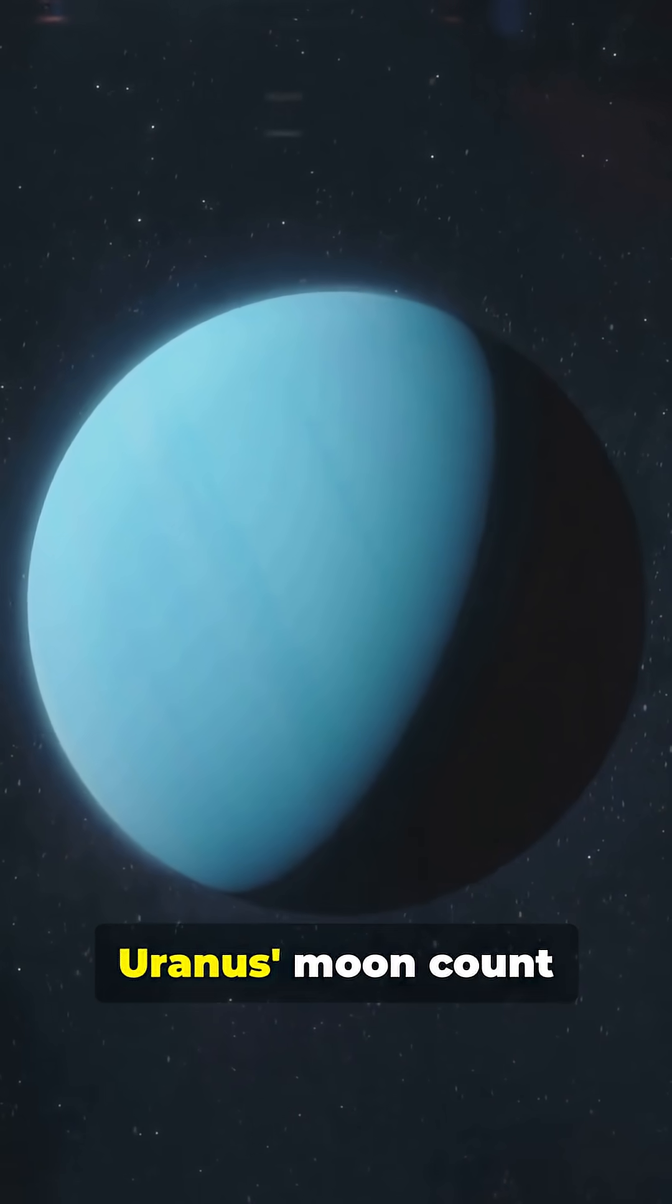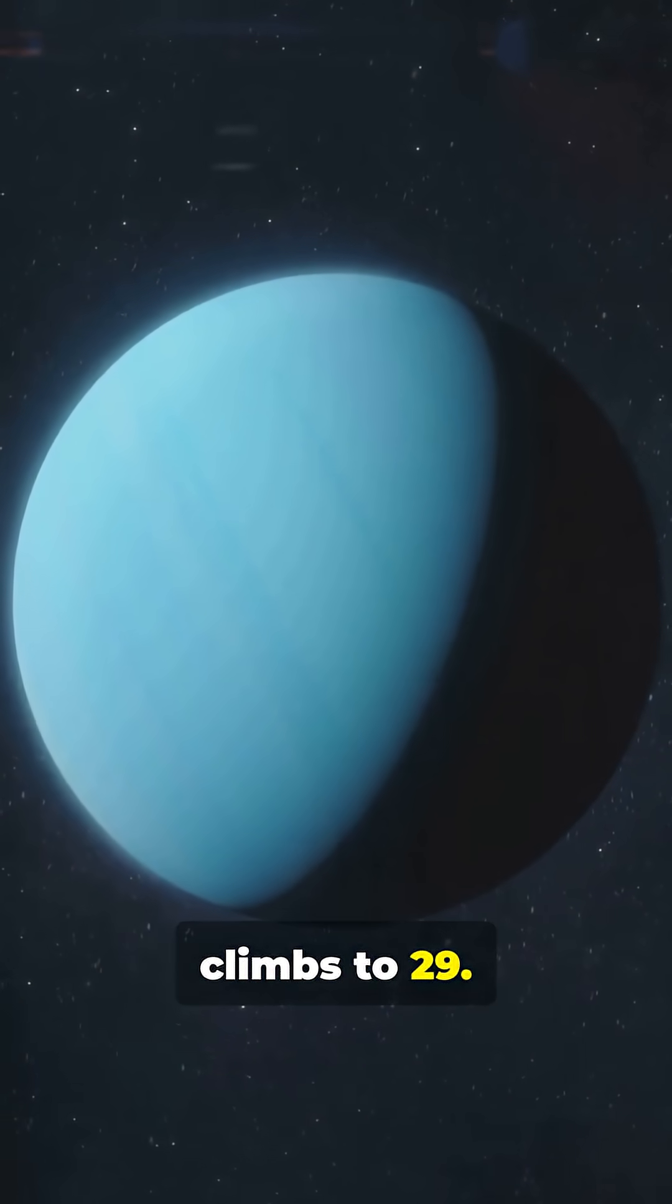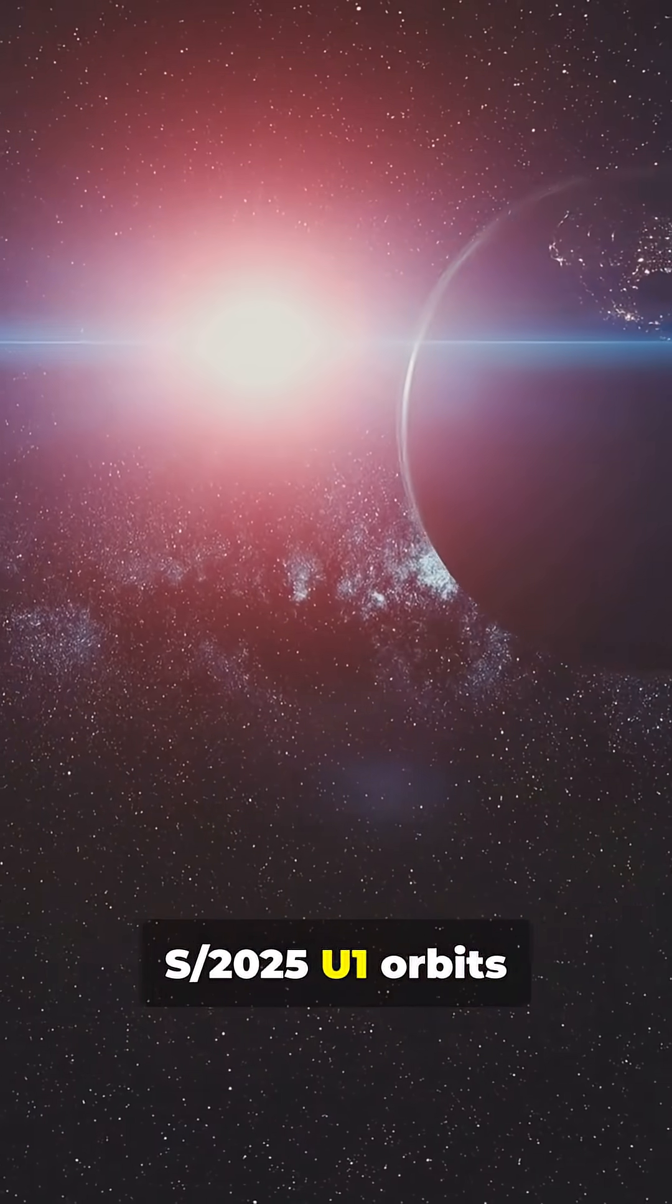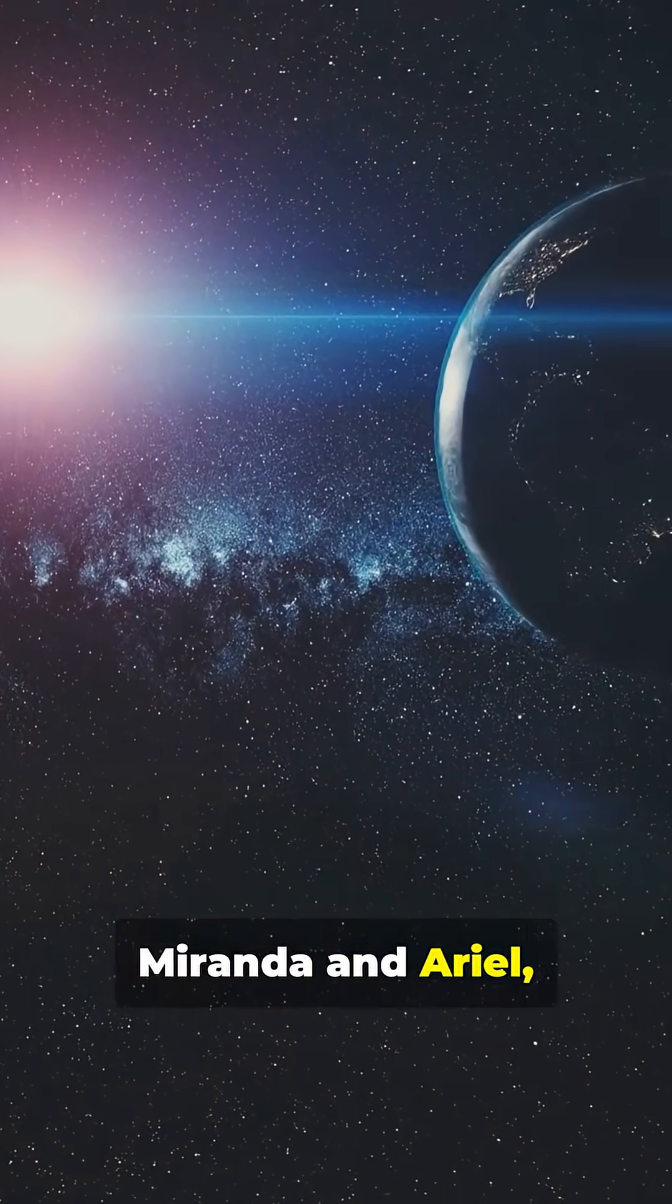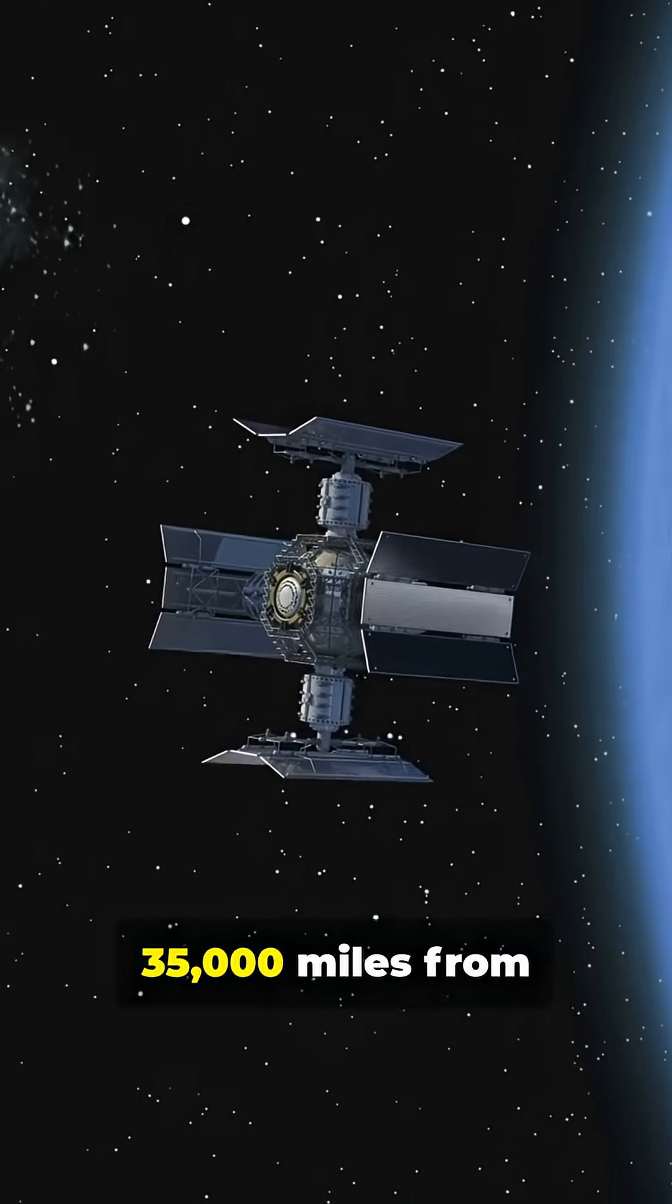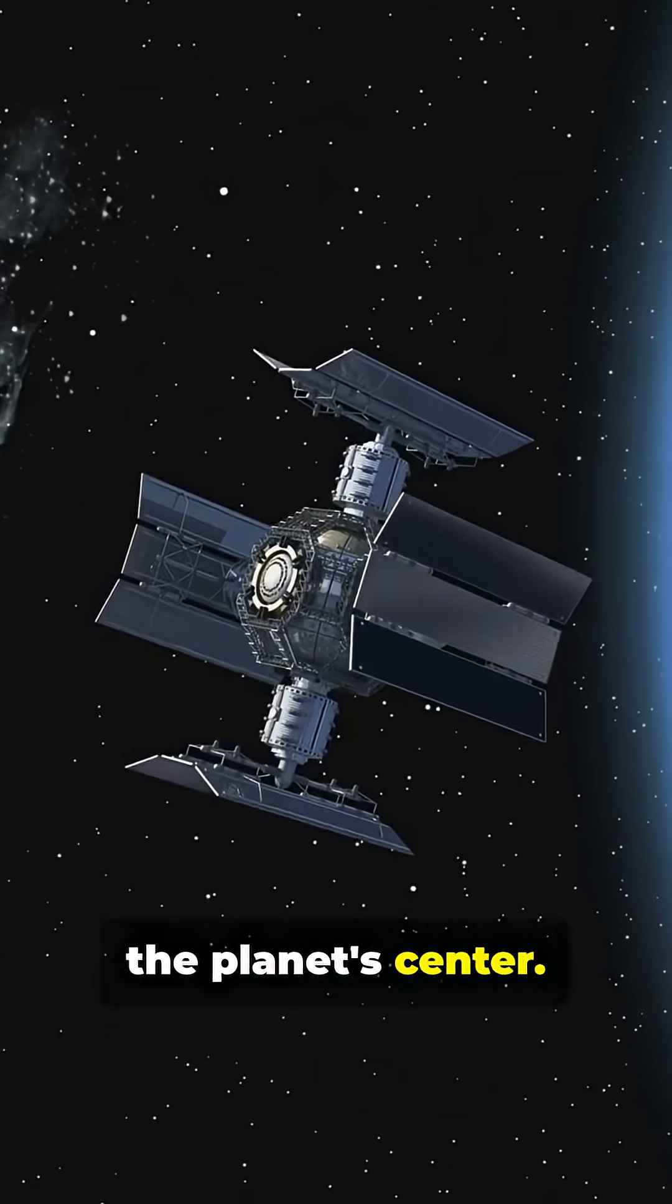With this discovery, Uranus' moon count climbs to 29. S2025U1 orbits just inside the larger moons like Miranda and Ariel, skating in a near-perfect circular path around 35,000 miles from the planet's center.